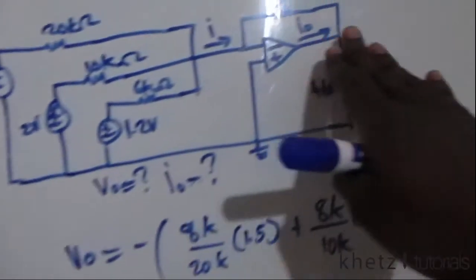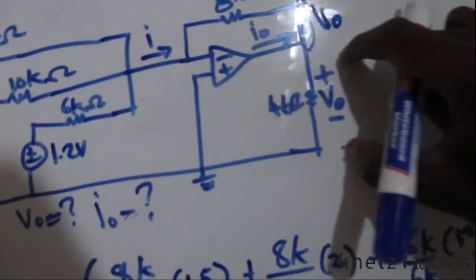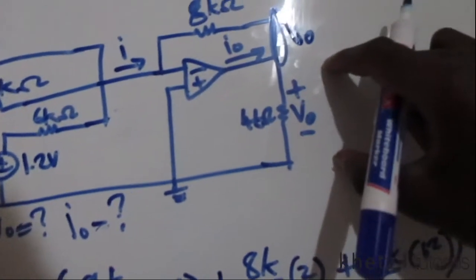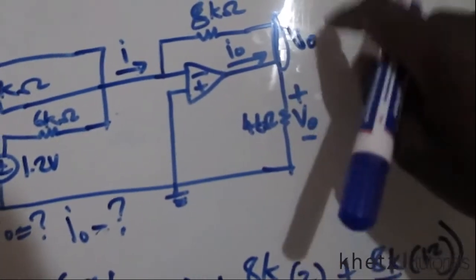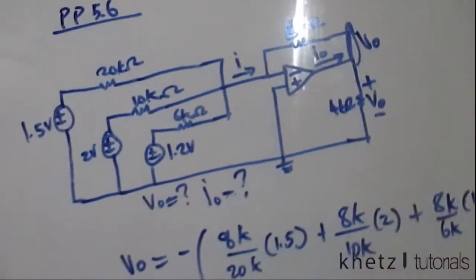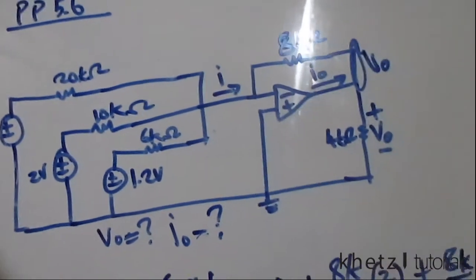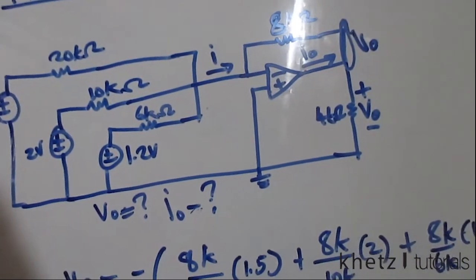Now to find io, we are going to look at this node. This node is vo because we have vo indicated across the resistor which is below this particular node, and therefore this node voltage is vo. Now you'll also notice that at this point there are quite a few methods which you can use to find io.